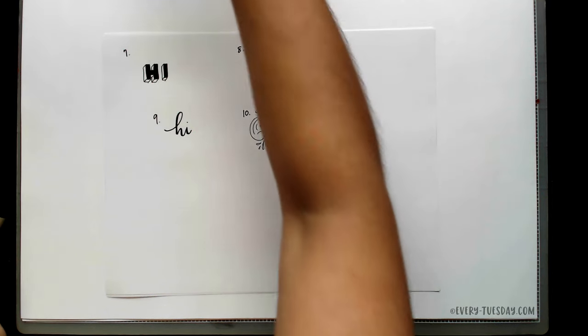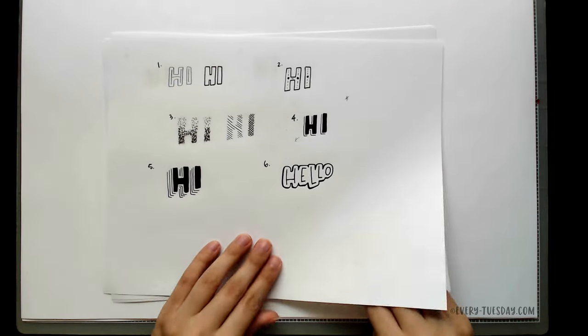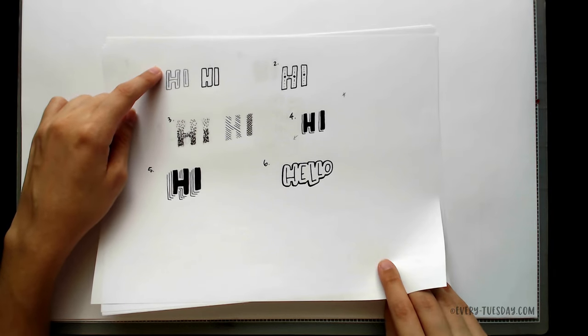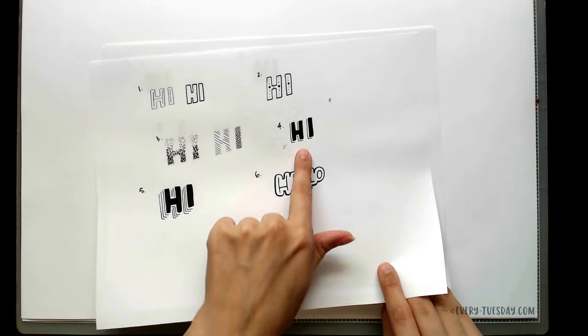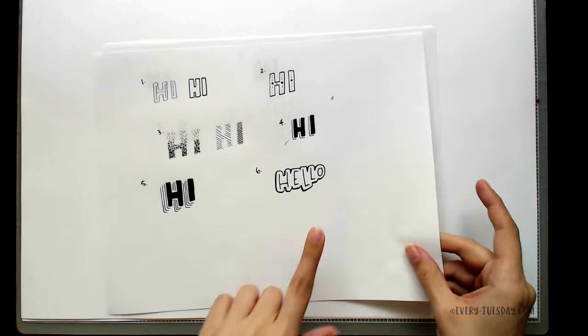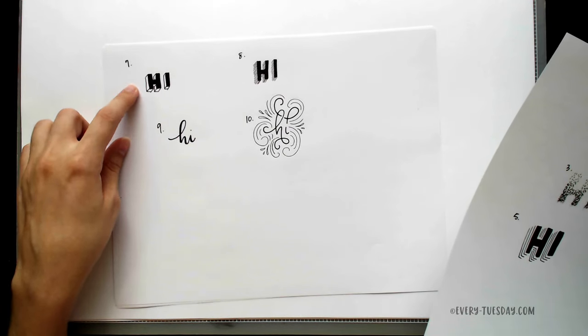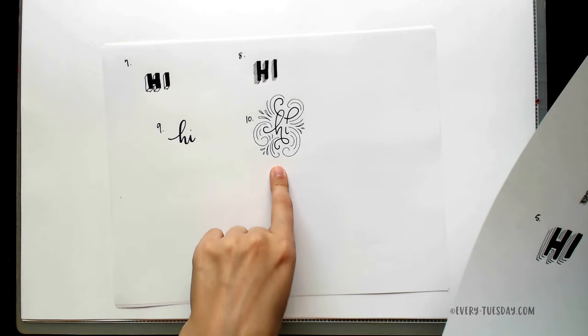Let's bring in our other enhancements just to sum everything up. Number one was our inline outline. Number two was our inline details. Three was texture and pattern. Four was a floating shadow. Five was a multi floating shadow. Six is a sticker effect. Seven is our 3D block. Eight is our angled shadow. Nine is faux calligraphy. And 10 is flourishing.